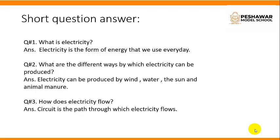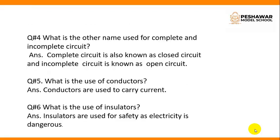Question number 3: How does electricity flow? Answer: Circuit is the path through which electricity flows. Question number 4: What is the other name used for complete and incomplete circuit? Answer: Complete circuit is also known as closed circuit and incomplete circuit is known as open circuit.